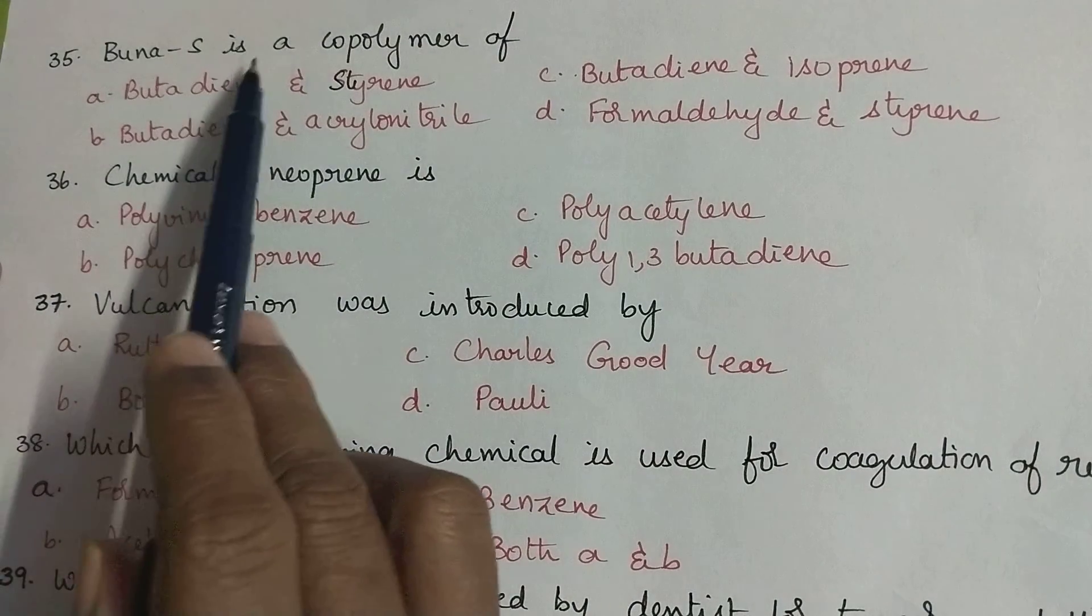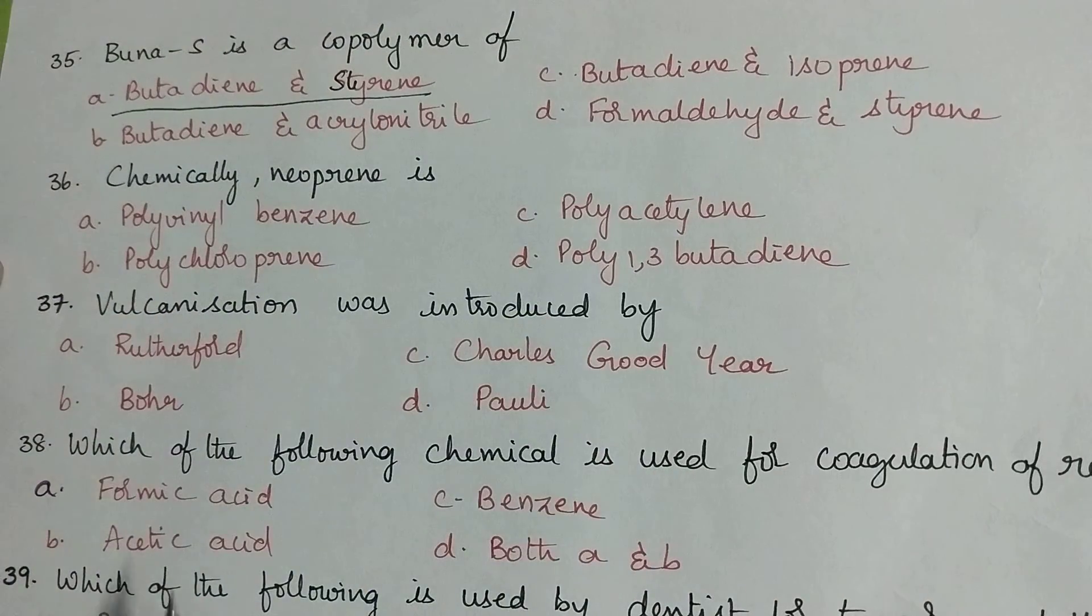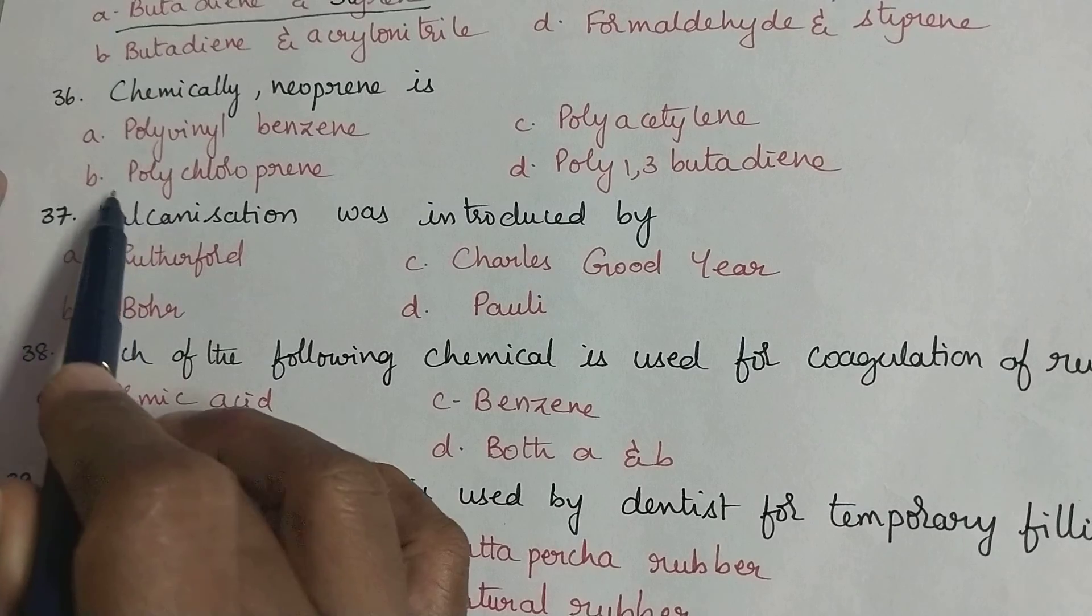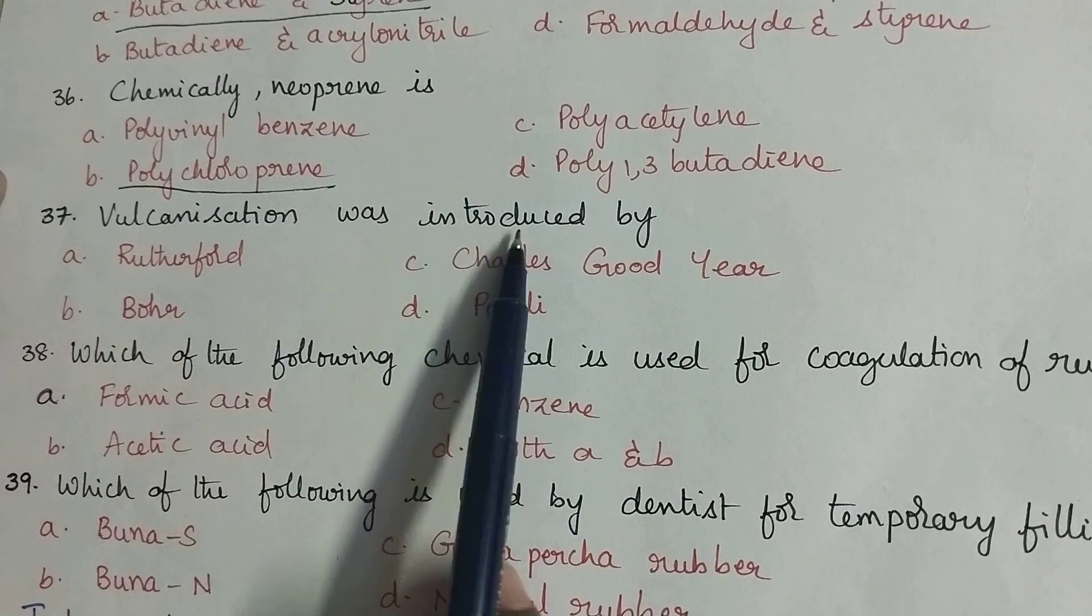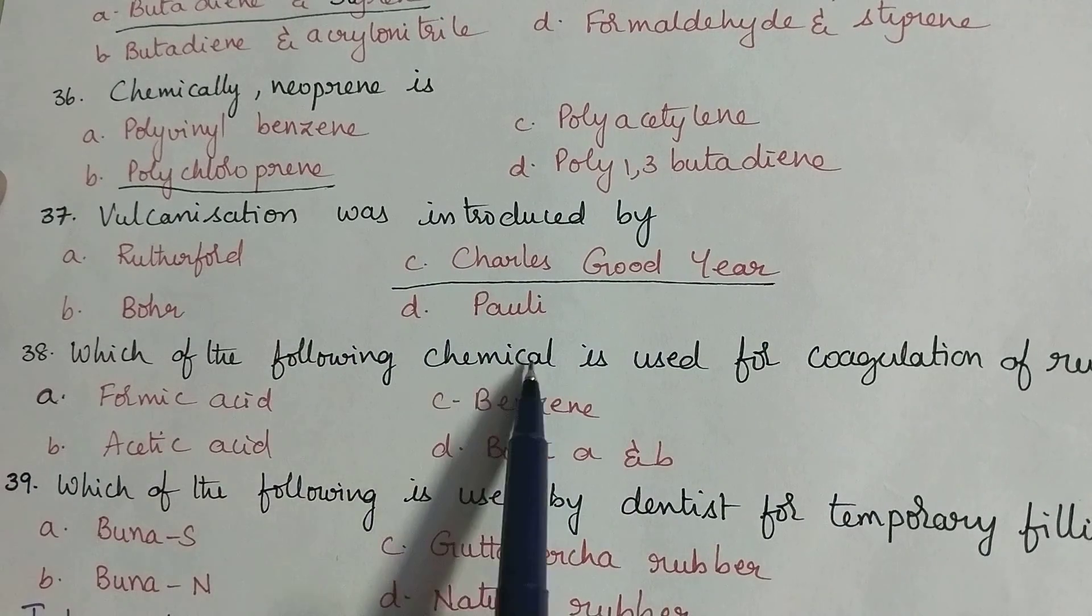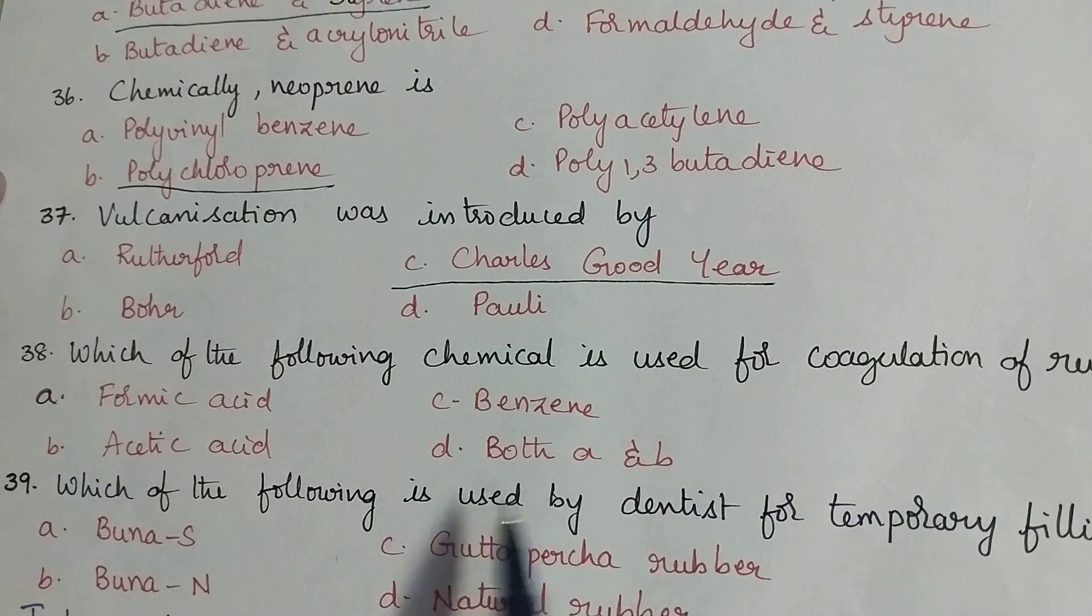Buna-S is a copolymer of butadiene and styrene. Chemically neoprene is polychloroprene. Vulcanization was introduced by Charles Goodyear.